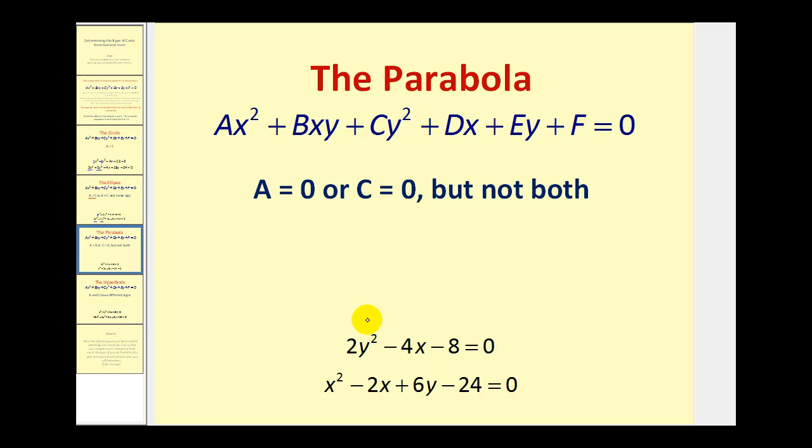This first example we have a y squared term but no x squared term, so A would equal zero but C is equal to two. And the second equation we have A equals one and there's no y squared term, so C would equal zero.